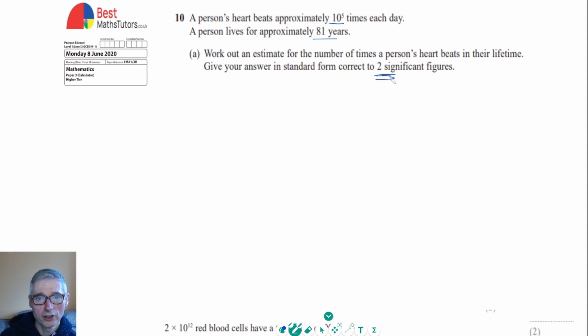So we can say it would be the number of days the person lives times by the number of times the heart beats in one day. For the number of days, there's 365 days in a year, and if we times that by 81, that would give us the number of heart beats in a lifetime if then times it by the 10 to the 5.